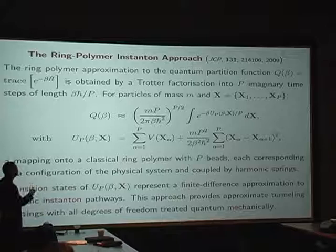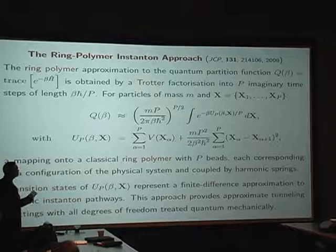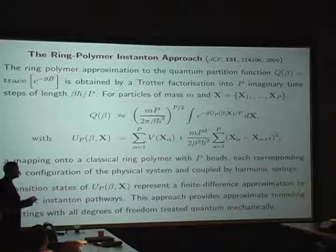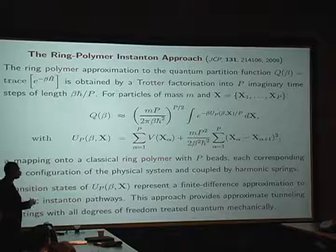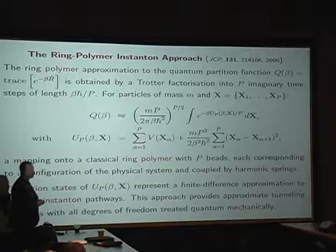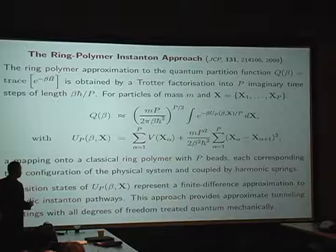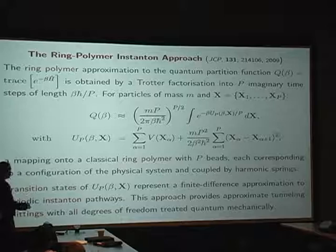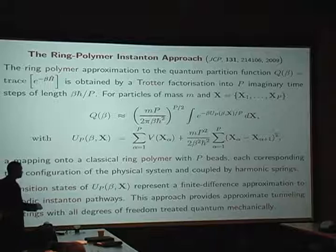So we've used the Feynman path integral representation of the partition function, where you break things down and make an isomorphism with a ring polymer. So you find that you can express the quantum partition function in terms of an effective potential, which is the real potential, plus these spring images. And you can differentiate this. So basically, if you've got capital P of these images, then it becomes a problem in 3 times n times p degrees of freedom. And in the instanton approach, Stuart and co-workers have shown that the transition states of this effective potential are a finite difference approximation to instanton pathways. These give you quantum rates and tunneling splittings. And it means that all the degrees of freedom are treated quantum mechanically. Approximately.